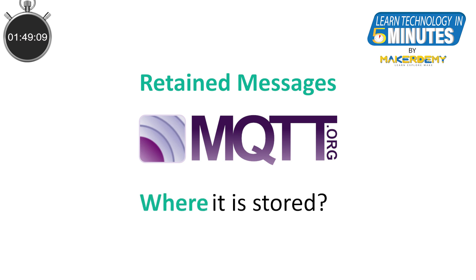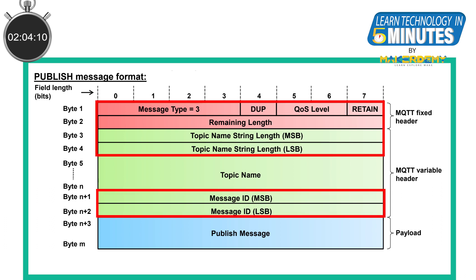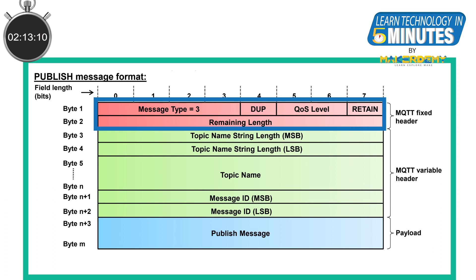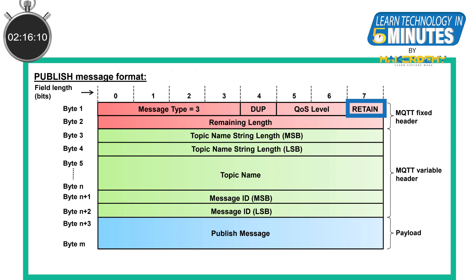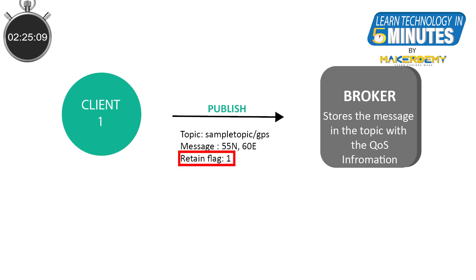Now we have looked at the why and the where aspect of the stored message. Let's look at how it is stored. A retained message is a normal MQTT message with the retained flag set to true. When a publisher sends data to the broker, it also sends some other information beyond the topic and the message itself — this packet is called the published packet. In this packet, a field in the fixed header is used to set the retained flag to 1 or 0. By default it will be set to 0, meaning the message will not be retained. But when we set it to 1, the broker on receiving this packet will store the message and its corresponding quality of service level for that topic.